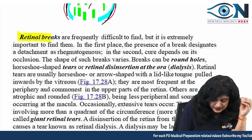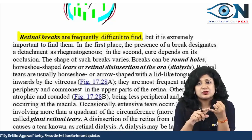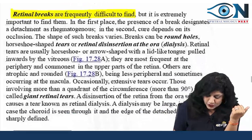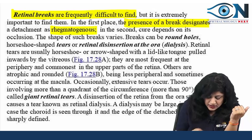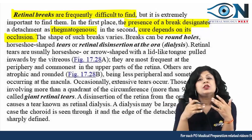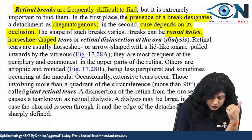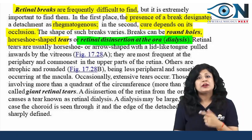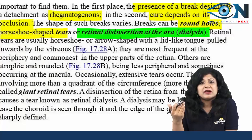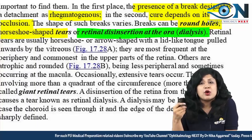Retinal breaks are frequently difficult to find, but very important to locate because finding them guides treatment — you seal the retinal hole. The break designates the detachment as regmatogenous and cure depends upon its occlusion. The shape of breaks varies: round holes, horseshoe-shaped, or dialysis — a detachment of the retina from the ora serrata, similar to iridodialysis for the iris.